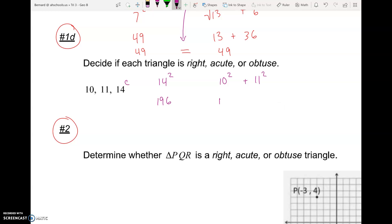And then 10 squared is 100. And 11 squared is 121. So 196, we'll add 100 and 121 together. That'll give us 221. And so what we see is 196 is less than 221. And when we have a less than situation, we have an acute triangle.